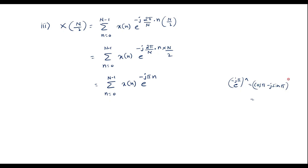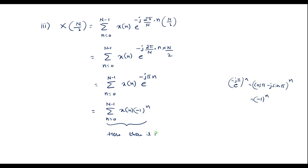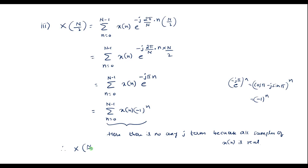Since cos(pi n) equals minus 1 to the power n and sin(pi n) equals 0, I can represent X of N by 2 as summation n equals 0 to N minus 1 of x of n times minus 1 to the power n. We can see that there is no j term, and since all samples of x of n are real, therefore X of N by 2 is real. Thank you for watching.